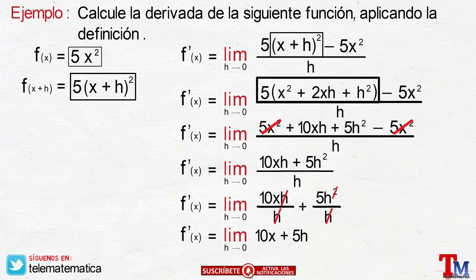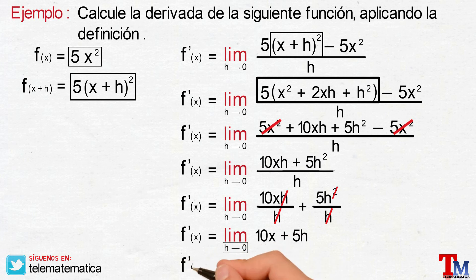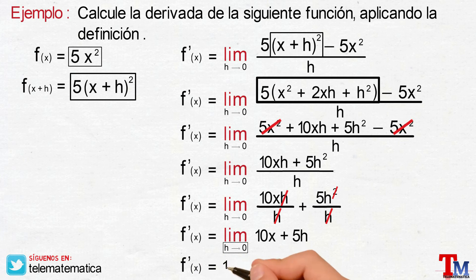Then replacing the value of h, which is 0, we would have finally that the derivative of the function is going to be equal to 10x, and this would be the final result.